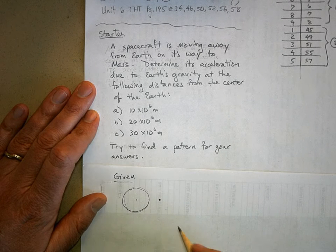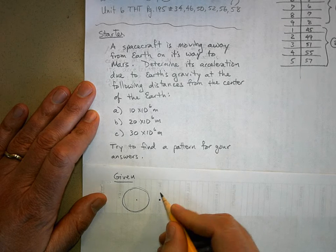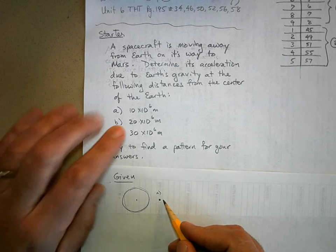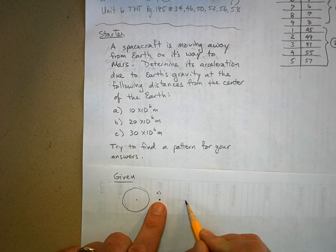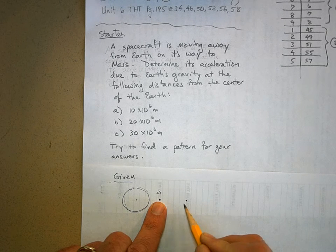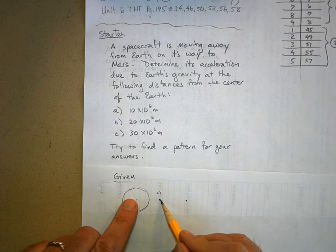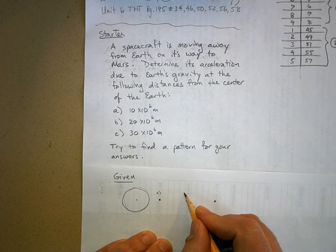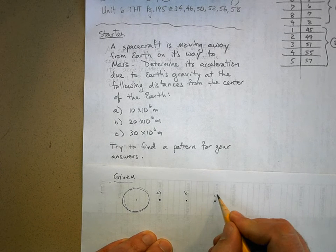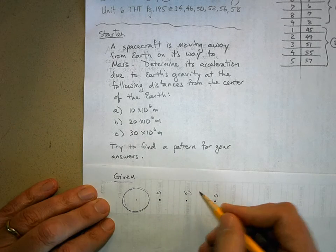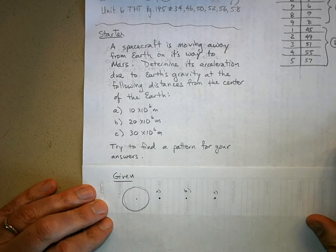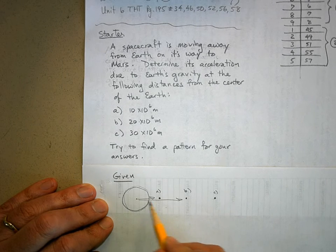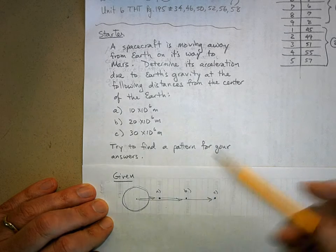Then 20 million would be twice as far away, and 30 million would be three times as far away. This is for part B and this is for part C. We're given these radial distances away.